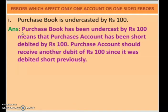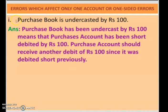Purchases are expenses, and expenses are debited when increased. So when we recorded this purchase book, we recorded it 100 rupees short. Purchase account should receive another debit of rupees 100, since it was debited short previously. That short amount of 100 we have to again show in our books of account — purchase account should be again debited with rupees 100. That way, we can rectify this one-sided error.